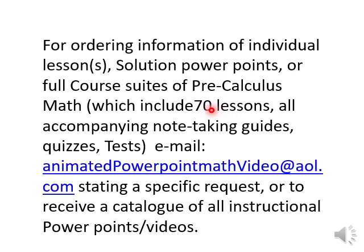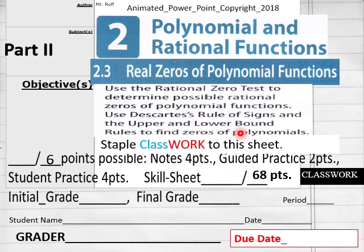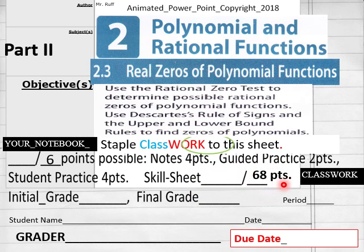Hello everybody, we're getting ready to do Lesson 2.3 Part 2 of Pre-Calculus Math today. Here is my contact email for materials and questions, solution PowerPoints. 2.3 Part 2, we got 68 points here of classwork lecture. You can get a note-taking guide that'll help you on those notes. And then a notebook entry — this goes into your notebook — six points of that.